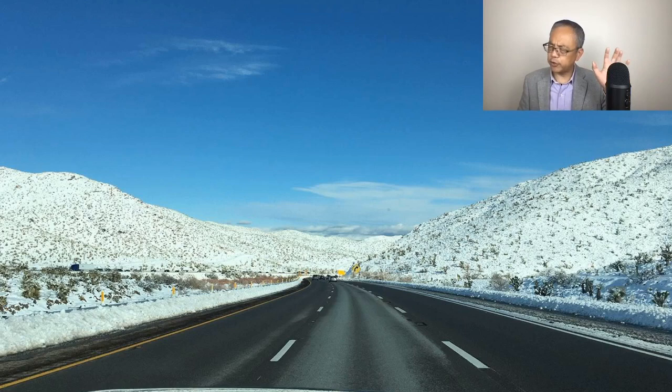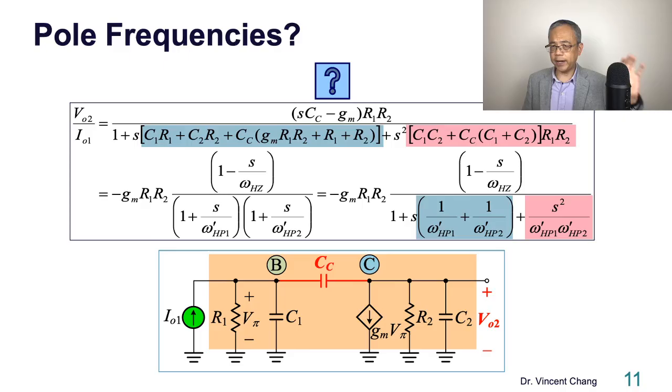So how to solve this? Actually two minutes ago I already gave you the answer. I already gave you a hint. So go back here. Pause five minutes. Try to figure it out: the omega HP1 prime and the omega HP2 prime, the two new pole frequencies. So I'll be back in five minutes.